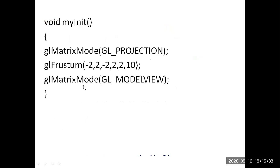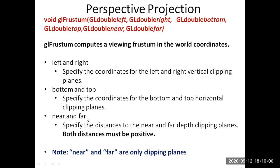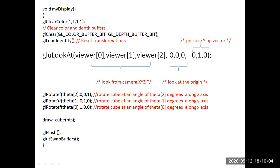glMatrixMode is called again to change from projection mode back to model view mode. glEnable activates the depth buffer. The glutDisplayFunc callback function registers myDisplay. In myDisplay, glClearColor sets the background color of the window. All RGB and alpha values are set to one, giving a white background. glClear clears the color buffer and initializes the depth buffer with the max value. glLoadIdentity resets and loads the matrix with an identity matrix by default.